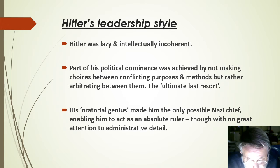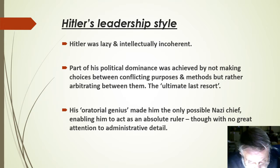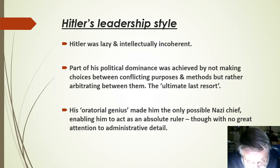Hitler himself was lazy and intellectually incoherent. Part of his political dominance was achieved by not making choices between conflicting purposes and methods, but rather arbitrating between them. A wide range of people — Nazi zealots, conservatives and others — could all continue to regard Hitler as their ally. His oratorical genius made him the only possible Nazi chief, enabling him to act as an absolute ruler, though not in the hard-working manner of Philip II or Napoleon with their great attention to administrative detail. Rather, Hitler was the ultimate last resort, the final adjudicator between conflicting subordinates and overlapping jurisdictions.